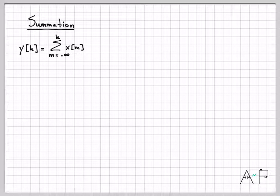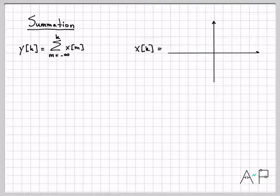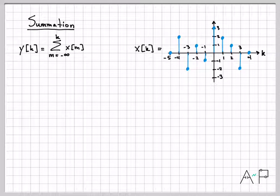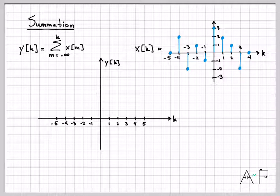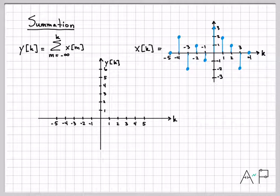By definition of summation, at time k the signal we create is the sum of all values of the signal up until time k. To figure out y of 0, I would need to add up an infinite number of values all the way up to and including time 0. Let's work with the same signal we had before. At time minus 5, y equals the sum of all values back to minus infinity, which are all 0, so we get 0 at time minus 5.